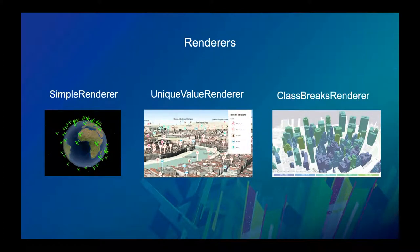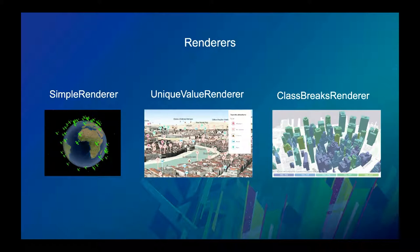The three renderers we support in 3D are Simple Renderer, Unique Value, and Class Breaks. Simple Renderer applies the same symbol across the board, whether for satellites or buildings with textures. Unique Value Renderer is for types — like points of interest in a city: museums, restaurants, churches, hotels — where you assign a unique symbol to a string value in your service. Class Breaks Renderer visualizes how much of something exists, for example buildings colored by the year in which they were built, with defined breaks such as 1900–1925 as blue, 1925–1950 as darker blue, and so on.